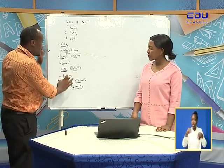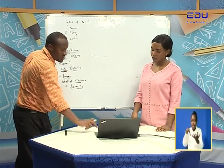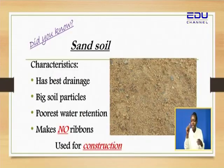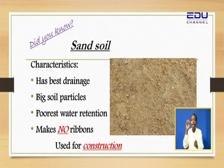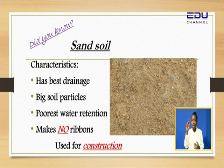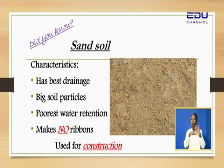When you talk about sand, sand is used for construction. When constructing your house, you mix it with cement and plaster your house — you join the stones and all that. But loam soil is used for farming. So that is about the types of soil: clay soil, sand soil, and loam soil.